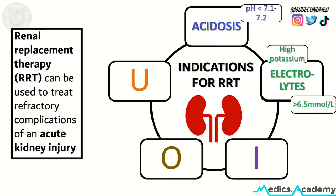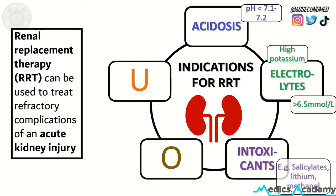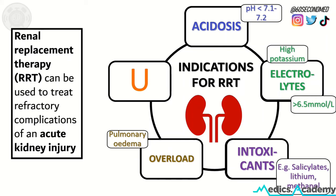When potassium is above 6.5 or is causing symptoms, that is also an indication for RRT. I stands for intoxicants — for example, salicylates, lithium, and methanol. When these accumulate in the system, RRT can be used to remove them. O stands for overload, and specifically pulmonary edema that is not responding to treatment.